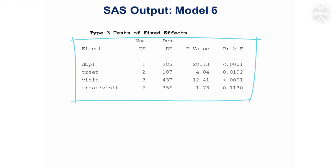So here we've got baseline diastolic blood pressure, and that's highly significant because it's taking out a lot of the variability that was occurring between the patients before they had treatment. And the treatment effect is also significant, as is the visit, but we don't have a treatment by visit interaction.